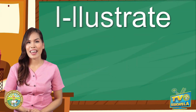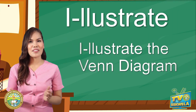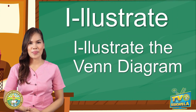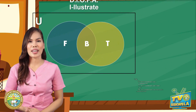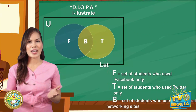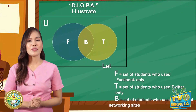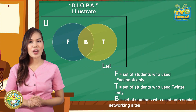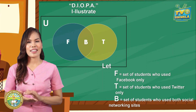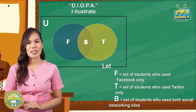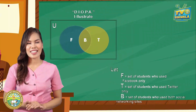Next step is I. I stands for illustrate. Illustrate the Venn Diagram. Let F equal the set of students who used Facebook only. Let T equal the set of students who used Twitter only. And let A equal the set of students who used both social networking sites.